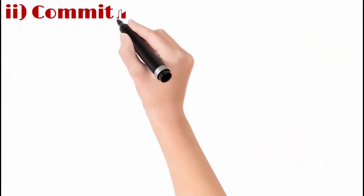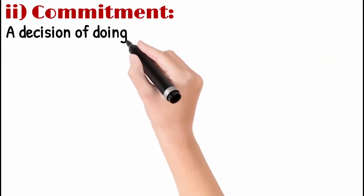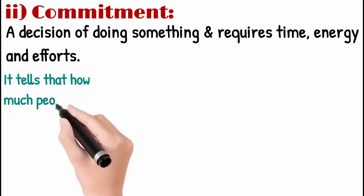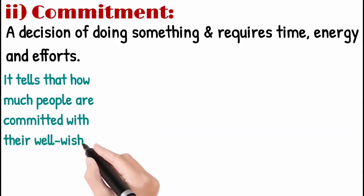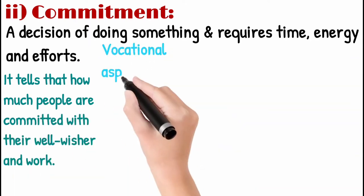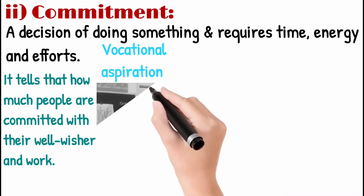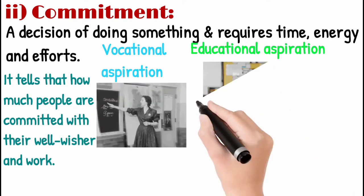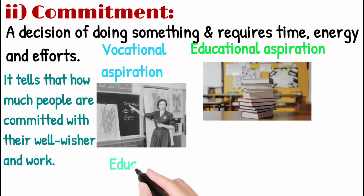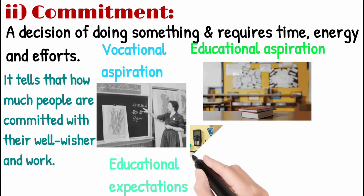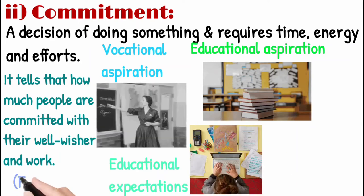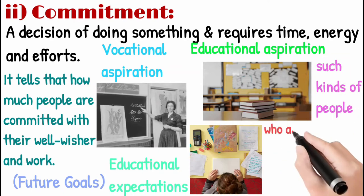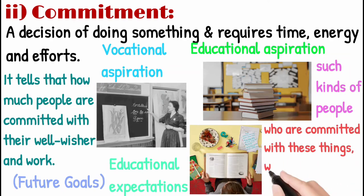Number two: Commitment — a decision of doing something that requires time, energy, and efforts. This tells us how committed people are with their work and their well-wishers. Their vocational aspiration, meaning their desire to learn skills, their educational aspiration, meaning their desire to study, and their educational expectations — how far they want to reach in the future, their future goals, and how much they focus on them. People who are committed to all these things stay away from criminal activities.